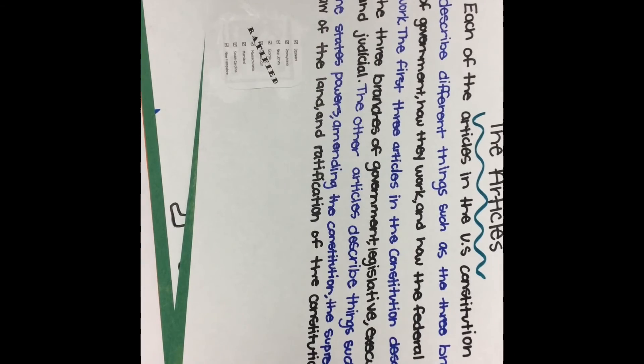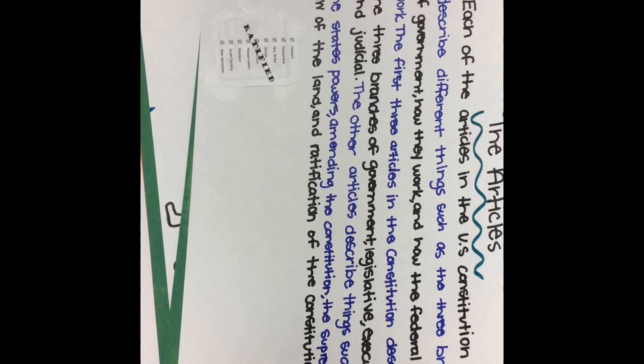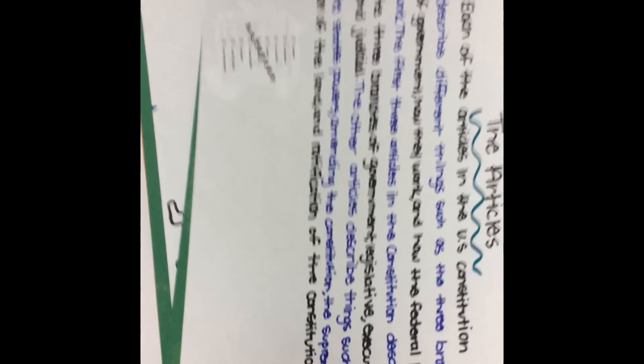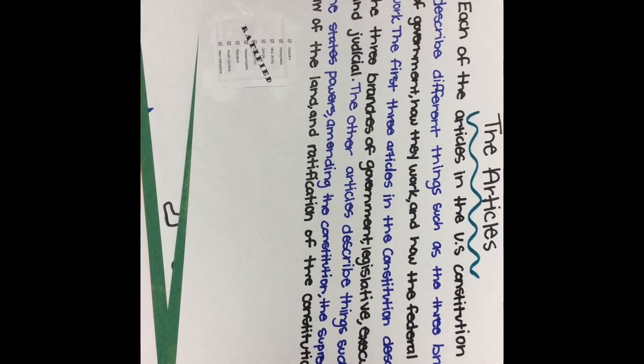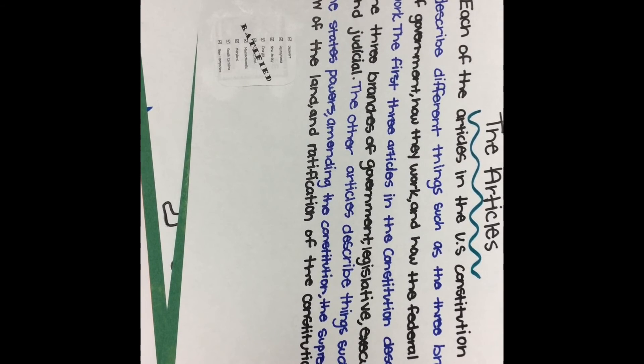Each of the Articles in the U.S. Constitution describes different aspects such as the three branches of government, how they work, and how federal laws work. The first three Articles describe the three branches of government: legislative, executive, and judicial. The other Articles describe the state's powers, amending the Constitution, the supreme law of the land, and ratification of the Constitution.